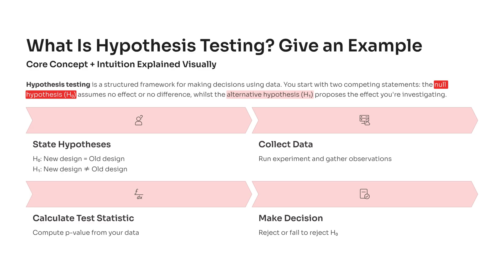Calculate your test statistic — this gives you a p-value, which tells you how strong your evidence is. Then make your decision: based on the p-value, you either reject or fail to reject the null hypothesis.